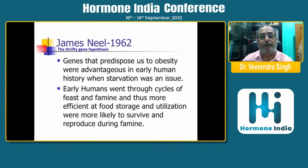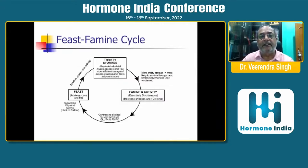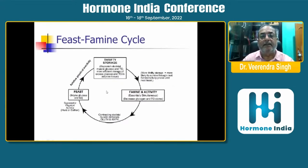He said that genes that predispose us to obesity were advantageous in early human history when starvation was an issue. Early humans went through cycles of feast and famine, and those more efficient at food storage and utilization were more likely to survive and reproduce during famine. During the feast period, there was a successful hunt, plenty of glucose and fat, and less inactivity — leading to thrifty storage, replenishing skeletal muscle glucose and triglycerides, with more efficient storage of excess glucose and triglycerides in adipose tissues.